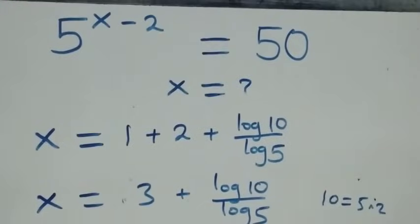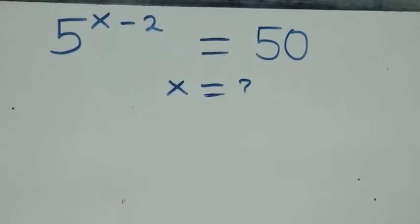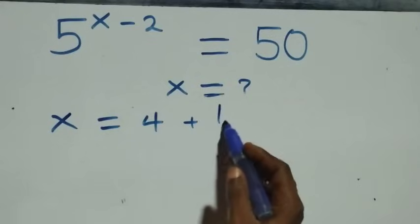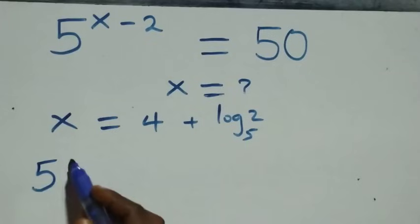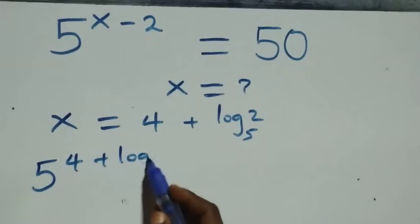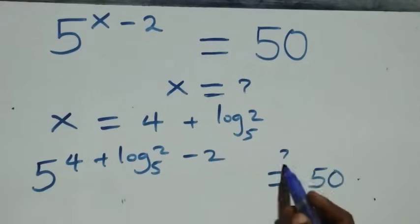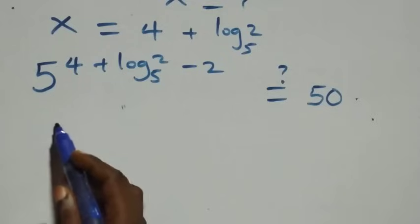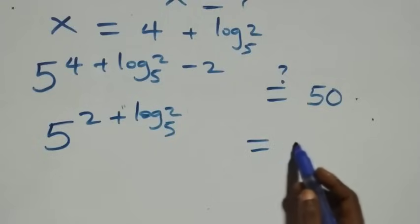Now let's verify. We substitute the value of x equals 4 plus log 2 base 5 back into the original equation. What we have becomes 5 raised to power (4 plus log 2 base 5) minus 2. We bring 4 minus 2 together — that is 2 — so we have 5 raised to power (2 plus log 2 base 5). Is it equal to 50?